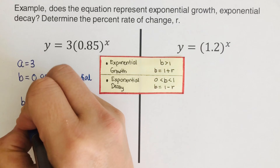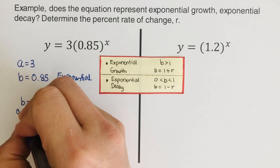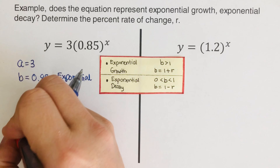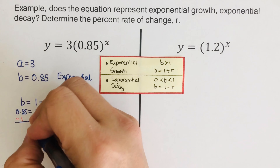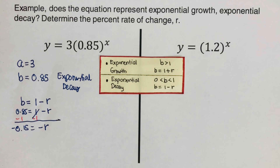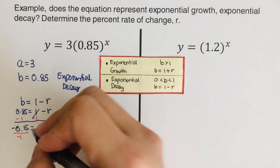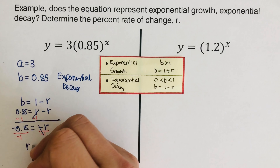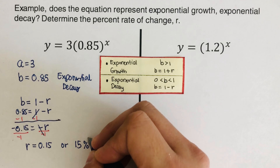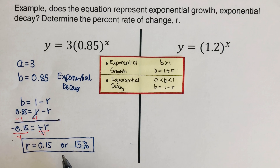To find the decay rate, we use b = 1 − r. Our b is 0.85, so 0.85 = 1 − r. Subtracting 1 from both sides gives −r = −0.15. Dividing both sides by −1, r = 0.15, or 15%. So the decay rate is 15%.